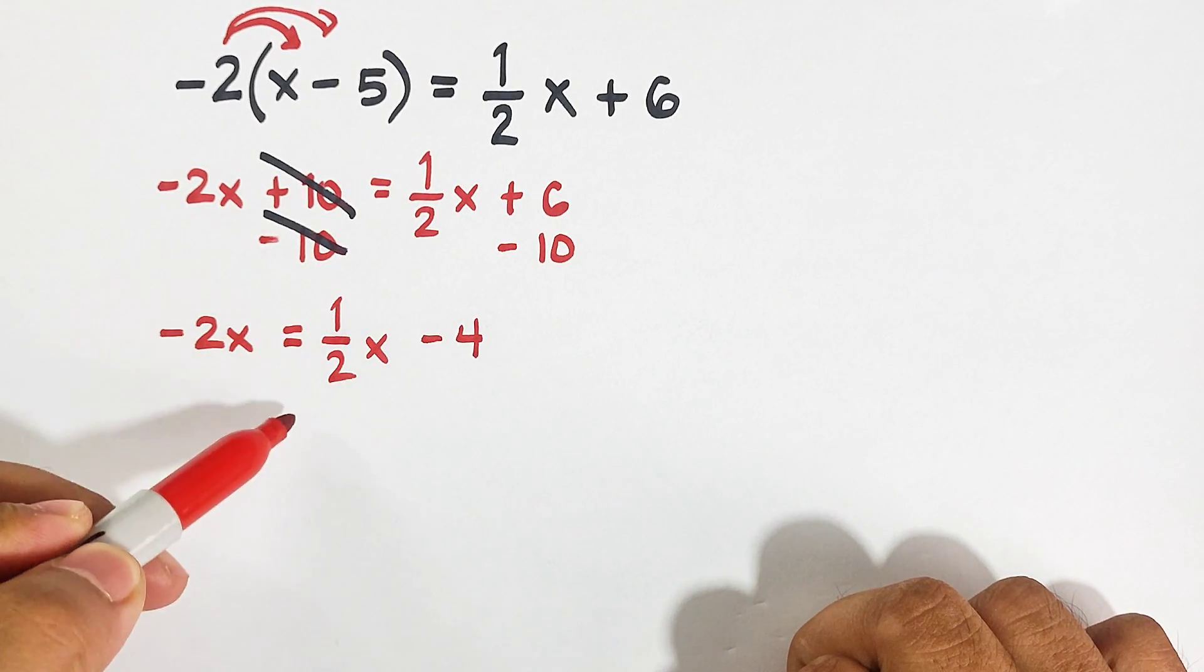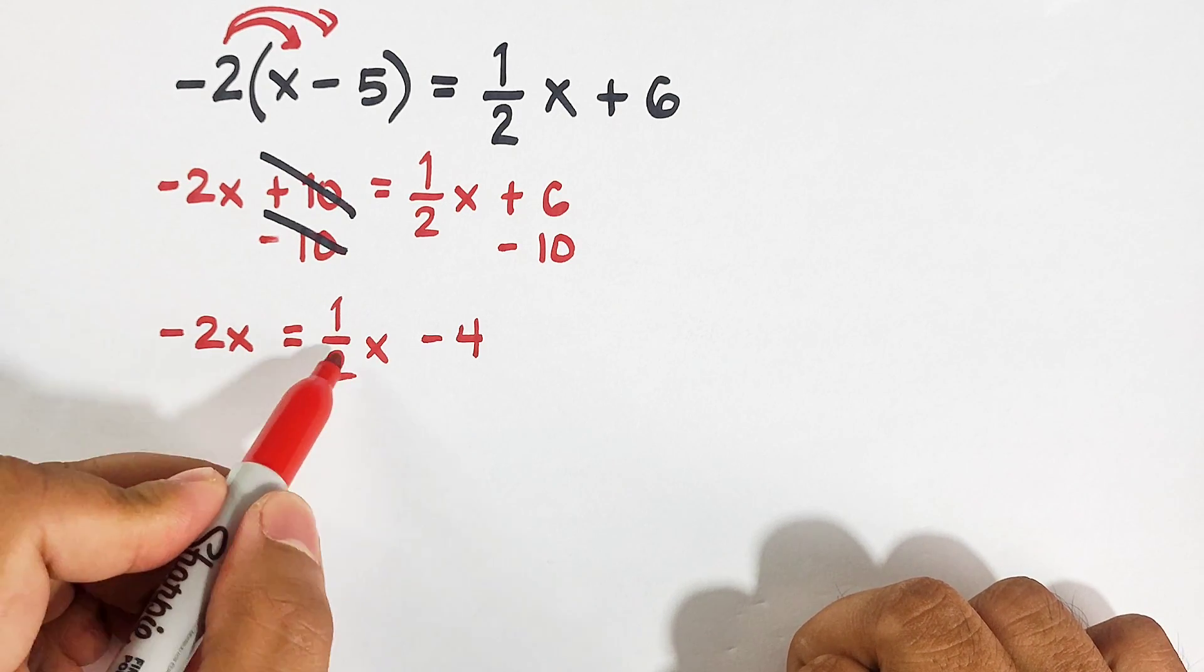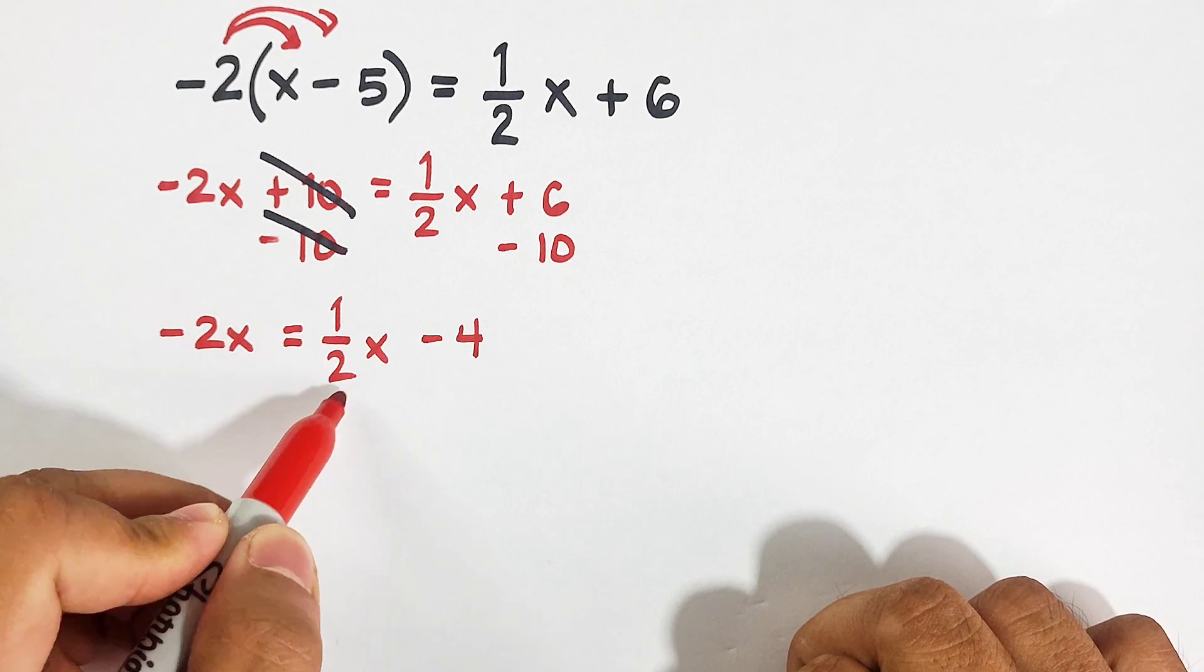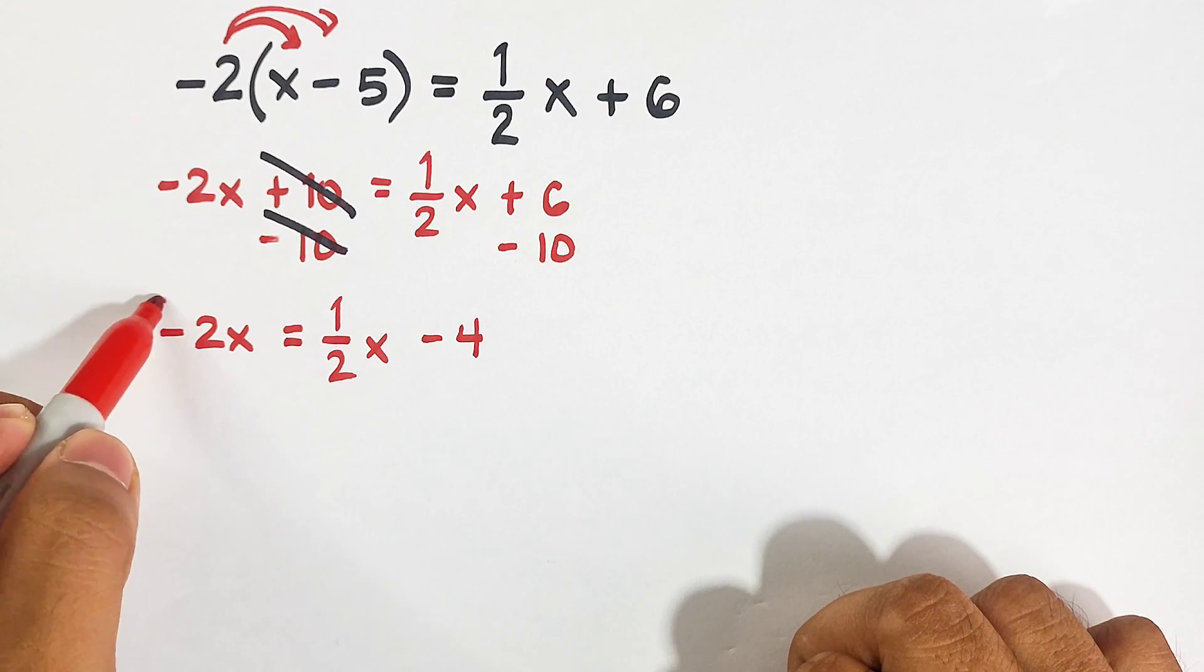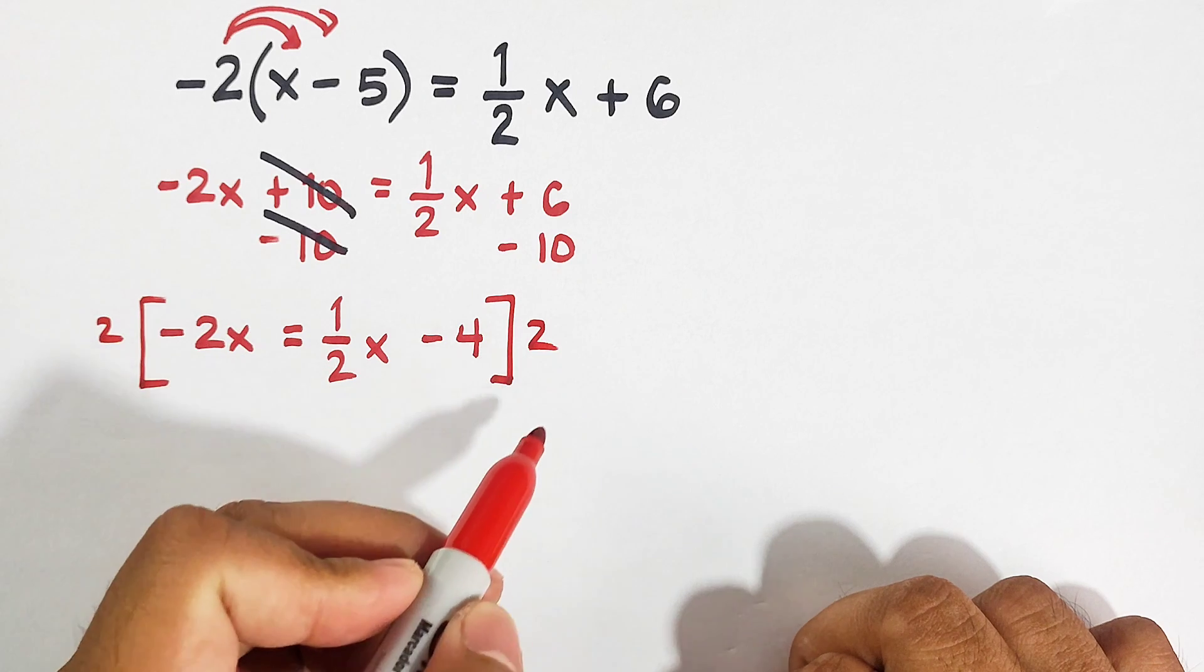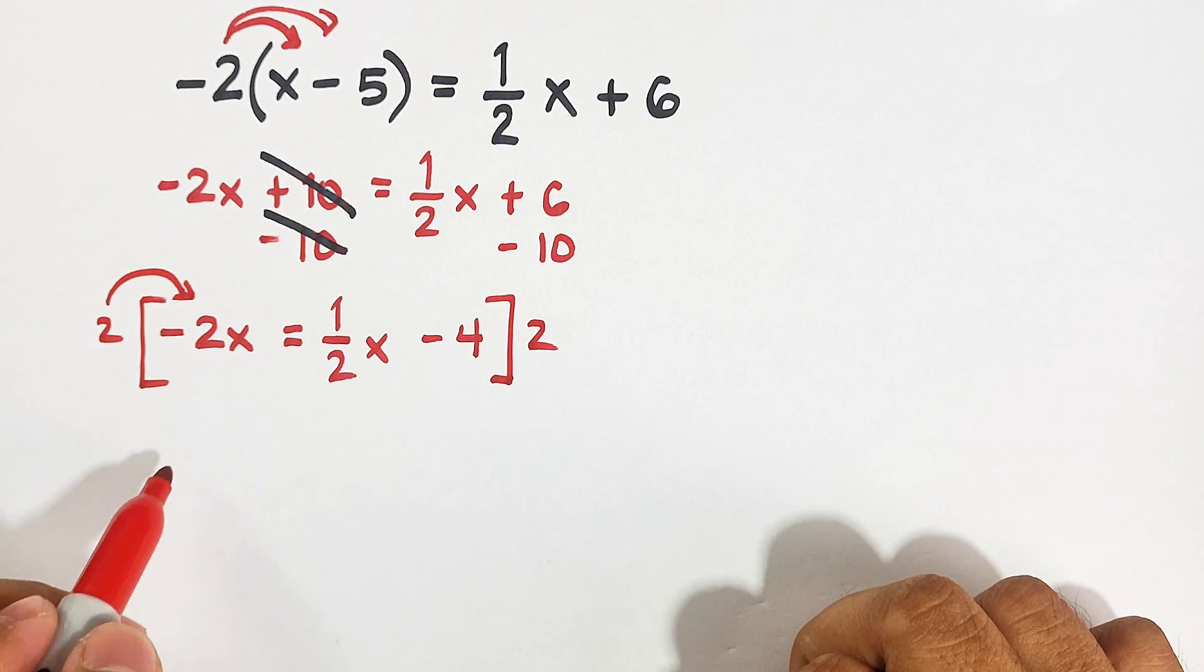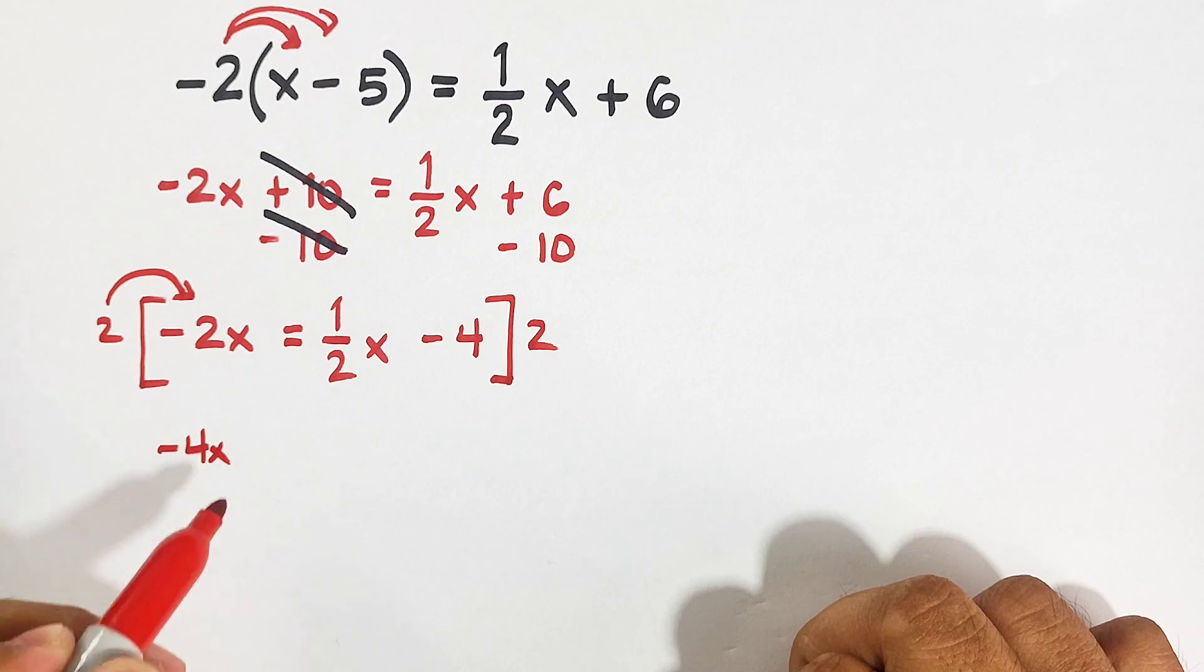Our next step is, before I transfer this x term, I'll remove first the denominator of 2. I will multiply the whole equation by 2. So multiply this: 2 times negative 2x, this is negative 4x.